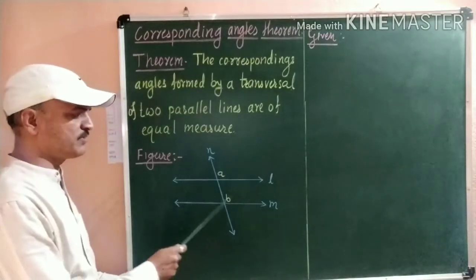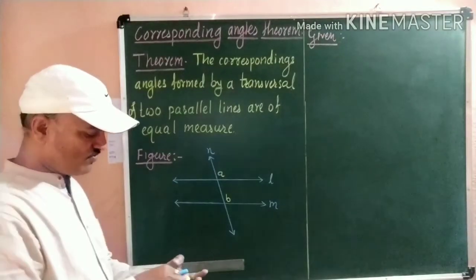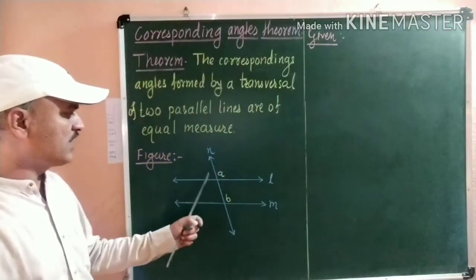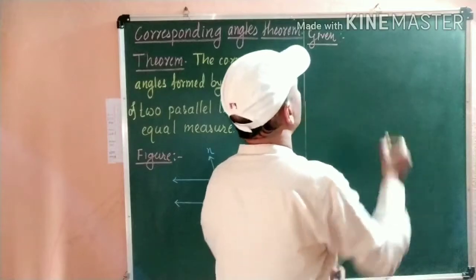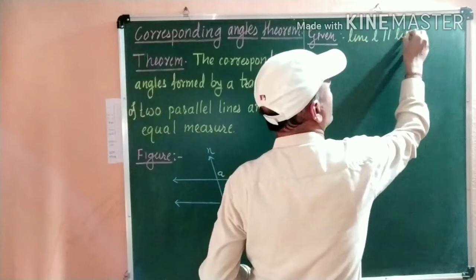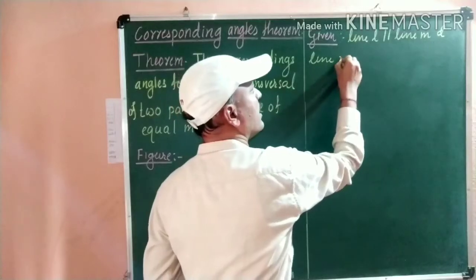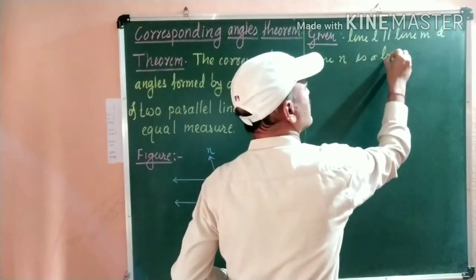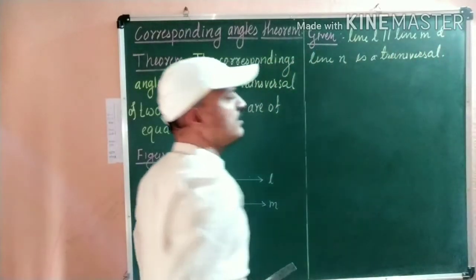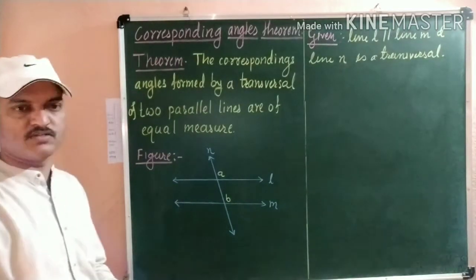There are four pairs of corresponding angles, but we take only one corresponding angle pair. Now we will write the given. What is the given? There are two parallel lines, so we write: line L parallel to line M, and line N is a transversal. This is the given.